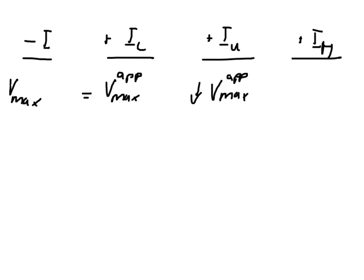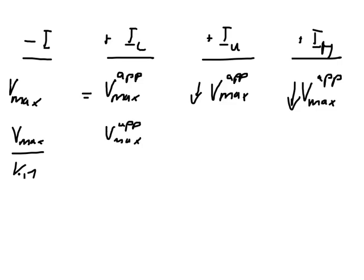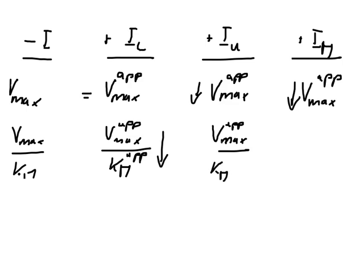We combine these two — competitive (stays the same) and uncompetitive (goes down) — so Vmax apparent for a mixed inhibitor goes down. Now for Vmax apparent over Km apparent: for a competitive inhibitor this stays the same, and for an uncompetitive inhibitor Vmax apparent over Km apparent goes down.